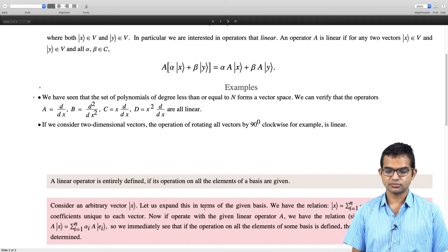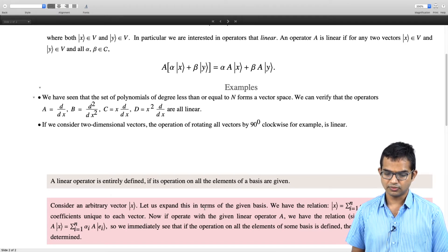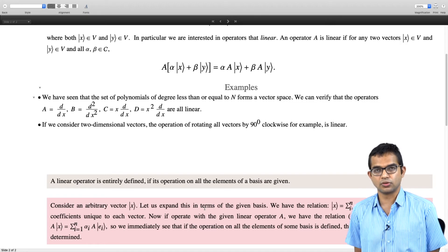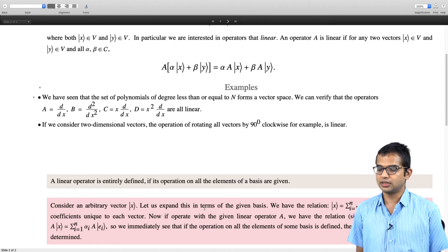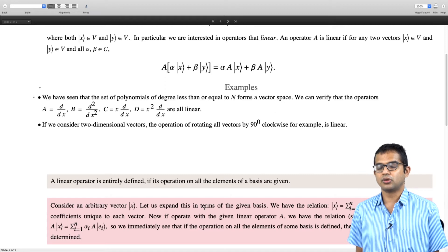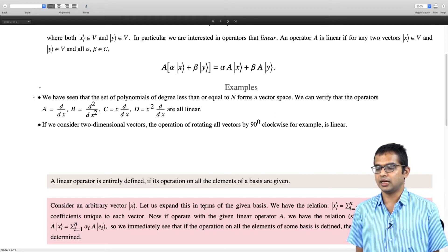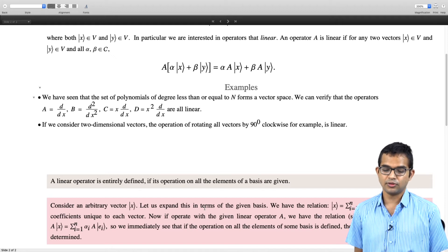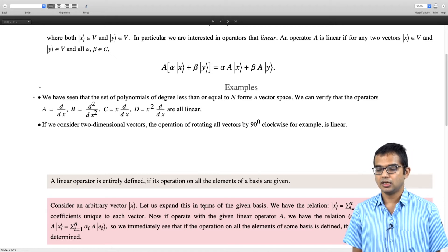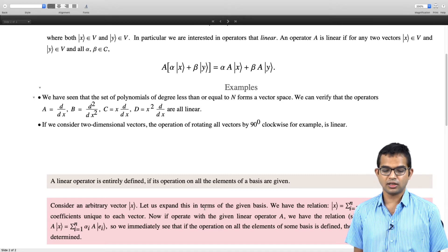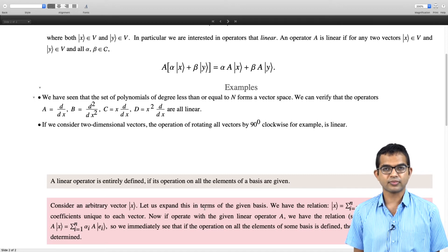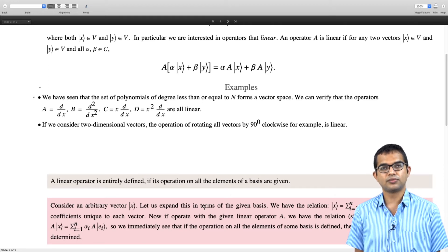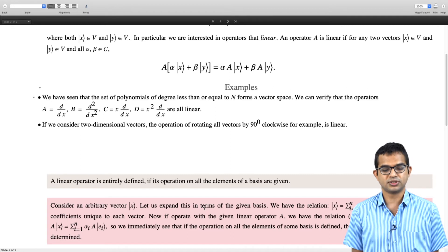Consider an arbitrary vector x. Let us expand this in terms of the given basis, which is always possible because it is a basis. We have the relation x is sum over i alpha_i e_i, where alpha_i are some coefficients which need to be determined. If we operate with the given linear operator A, we have the relation A acting on x. Because it is linear, you can take this operator and act it individually on the different vectors e_i, the basis vectors.